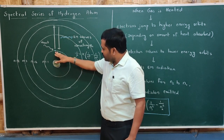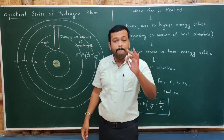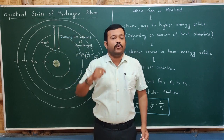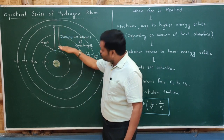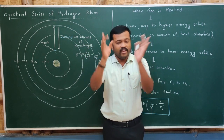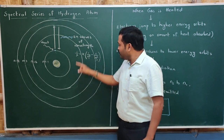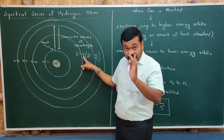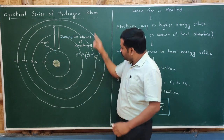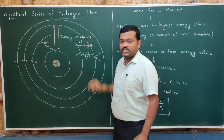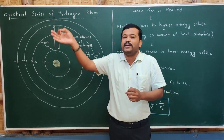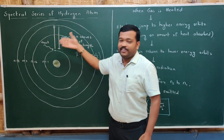Let us take this electron — it jumps from the first energy orbit to the third energy orbit. But an electron cannot remain there for a long interval of time; it must return to its lower energy orbit. When the electron returns, it emits electromagnetic waves. The wavelength is given by: 1/λ = R(1/n₁² − 1/n₃²), where n₃ is the higher orbit and n₁ is the lower orbit.